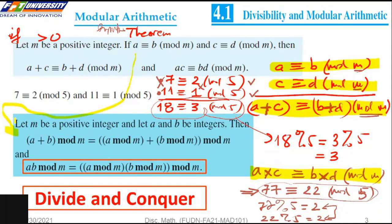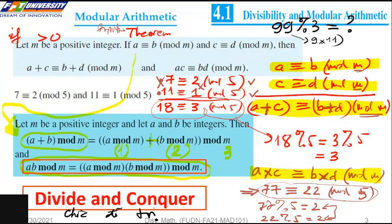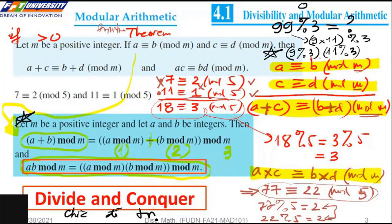From the theorem, we have a corollary. To compute the value of a modular expression, we can do it in three steps: first compute a modulo m, second compute b modulo m, and then add the two remainders and perform a final modulo. For example, to find 9 times 11 modulo 3, we find 9 mod 3 = 0 and 11 mod 3 = 2, then 0 times 2 = 0, and 0 mod 3 = 0.